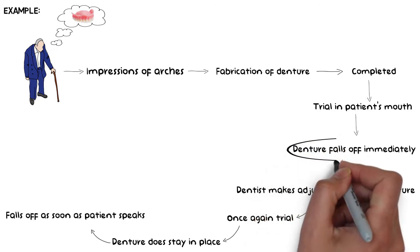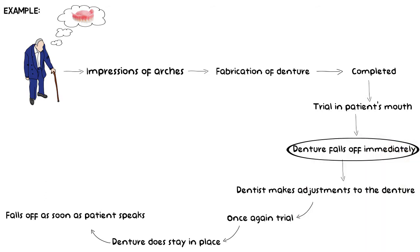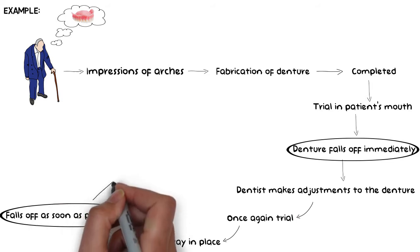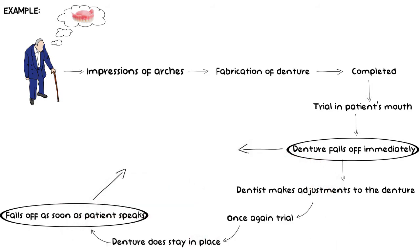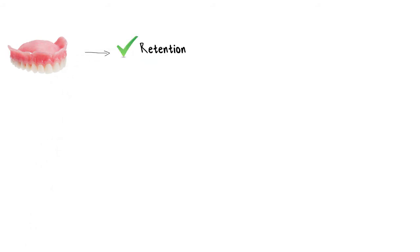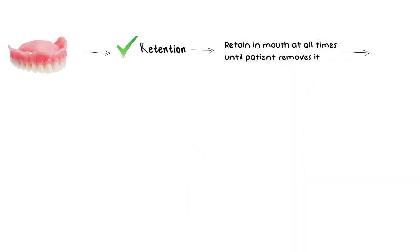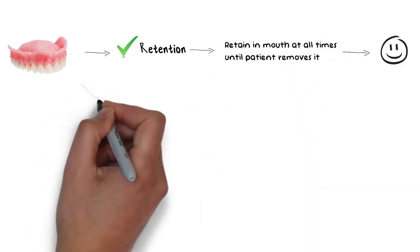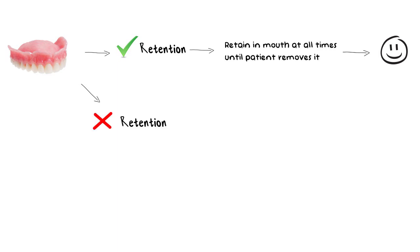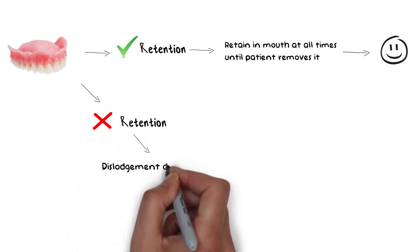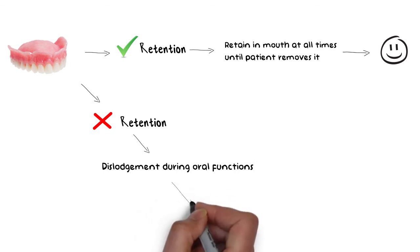In both situations we can say that the denture does not have adequate retention and therefore it does not retain in the patient's mouth. For a denture to have adequate retention, it needs to retain in the patient's mouth at all times until the patient himself willingly wants to remove it. Otherwise the denture will keep on dislodging during speaking, chewing, or other normal oral functions, which is highly undesirable.